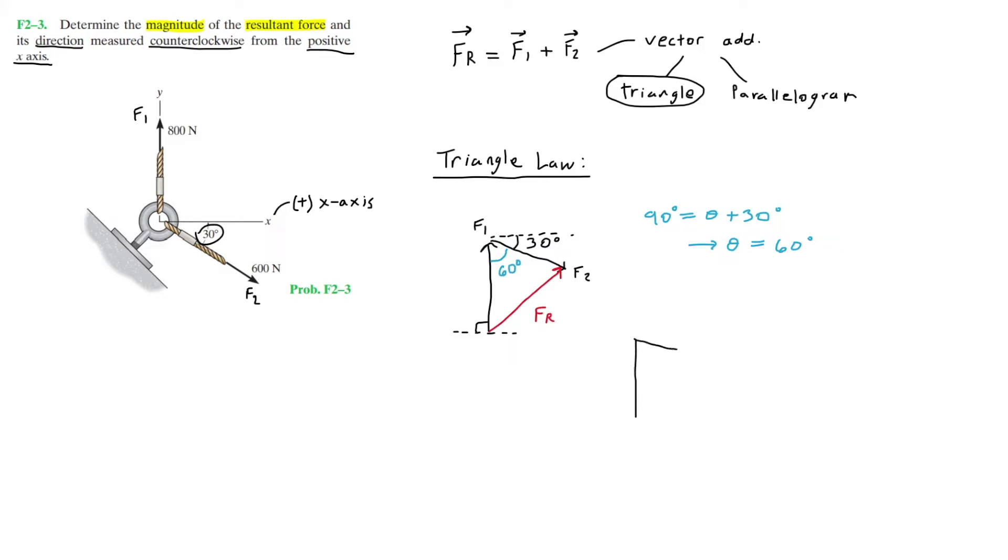Now I'm just going to redraw the triangle for simplification. This we know is 800 from the 800 newtons, this length is 600, and this is FR. Over here the angle is 60 degrees. So that right there is our triangle.